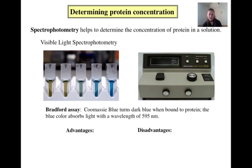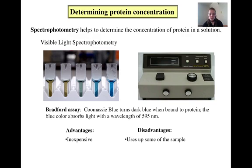There are some advantages and disadvantages to this type of spectrophotometry. Its one real advantage is that it's relatively inexpensive compared with UV light spectrophotometry. There are a number of disadvantages, however. You need to use up some of your sample, as you have to add Coomassie blue and cannot regain the original. The analysis is much more time consuming, as you have to wait for the reagent to react and the sample to change color. There are also limits on sensitivity, as the Coomassie blue may turn incredibly similar colors when mixed with solutions of slightly different concentrations.